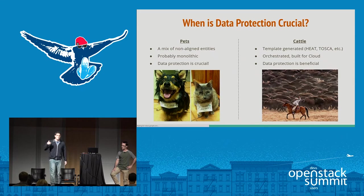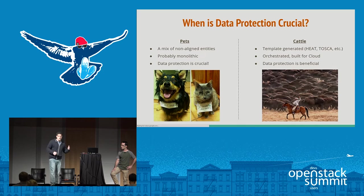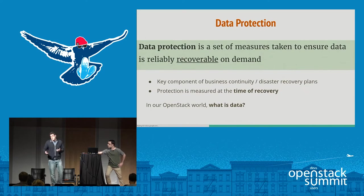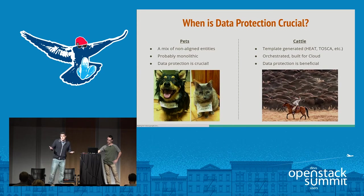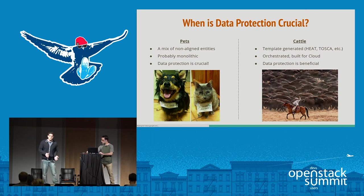In the cattle paradigm, what you typically do is create a template like Heat or Tosca, orchestrate it, and it runs in your cloud by itself. So why do you need something to back up your application? Well, every application has data — a database, file storage, object storage — something that needs to be saved somewhere.